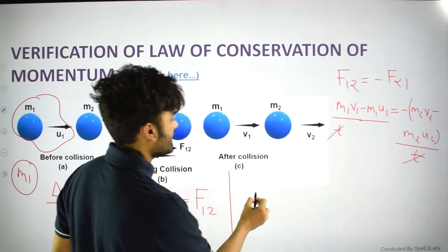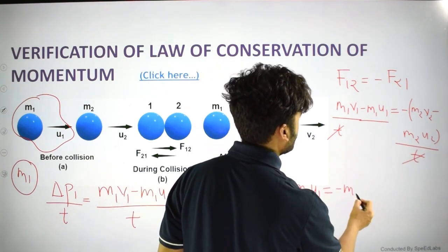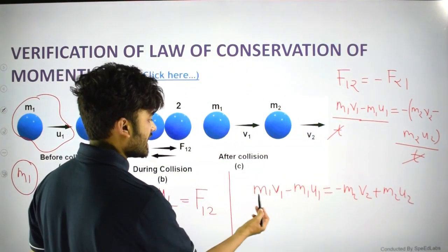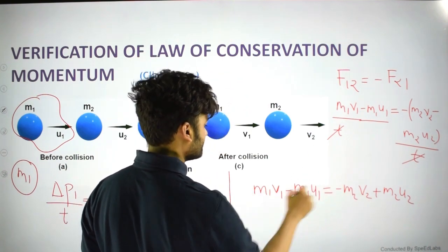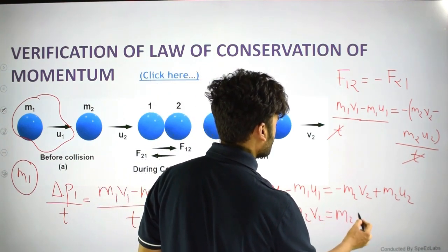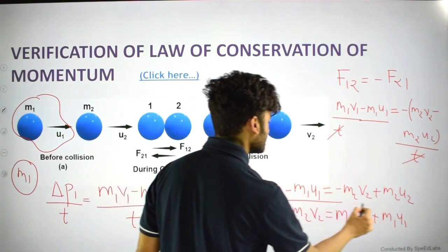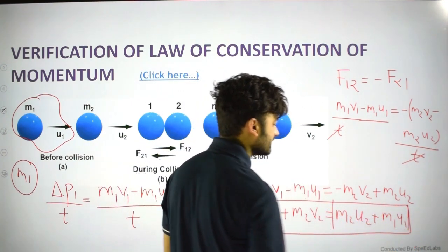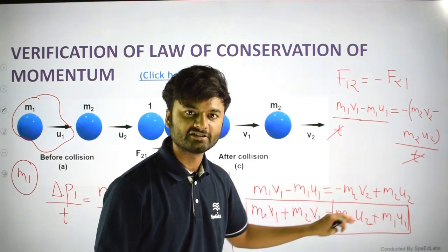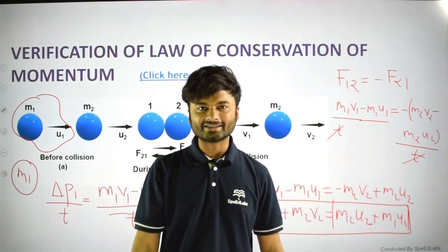This simplifies to: m1·v1 − m1·u1 = −m2·v2 + m2·u2. Rearranging, we get: m1·v1 + m2·v2 = m1·u1 + m2·u2. The left side is the final momentum and the right side is the initial momentum — they are equal.